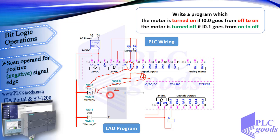This pulse makes the SR flip-flop turn on its output. The second line works like the first line. Pay attention: this instruction works based on the I0.0 address, not the state of the virtual power which is called RLO.